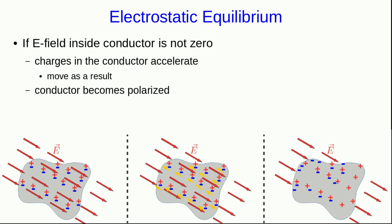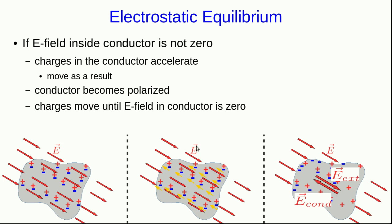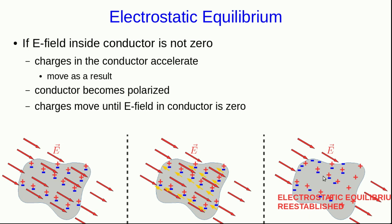Now think about the electric fields. There's still that external electric field imposed on the system from charges outside. But because we now have a bunch of negative charge on one side and a bunch of positive charge on the other, the charges in the conductor are producing their own electric field that points in the opposite direction. The charges in the conductor keep moving until the electric field inside the conductor is zero — when this internal electric field and the external electric field exactly cancel each other. At that point, the E field inside is zero, the charges don't accelerate anymore, and electrostatic equilibrium is re-established. This whole process is extremely fast — in most cases it happens in nanoseconds or even picoseconds.